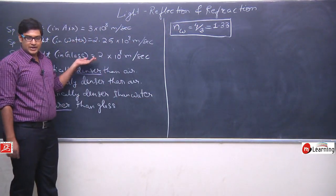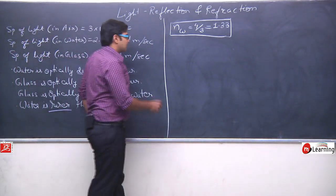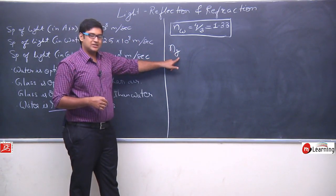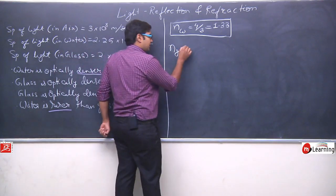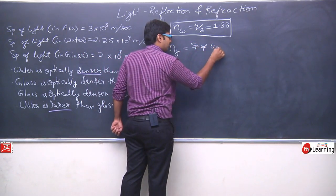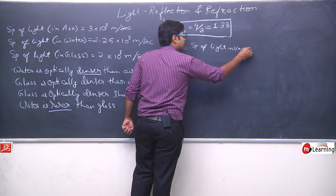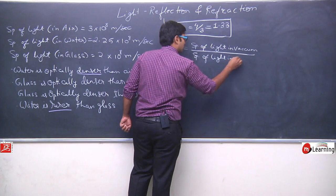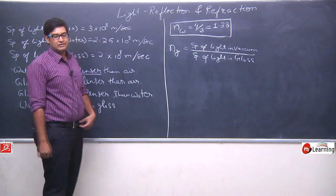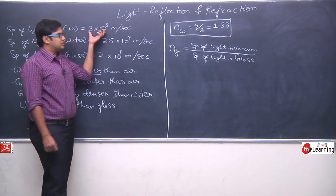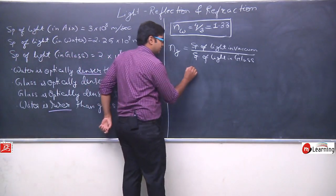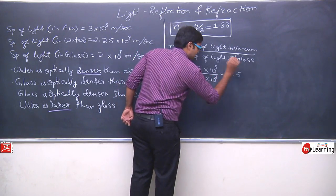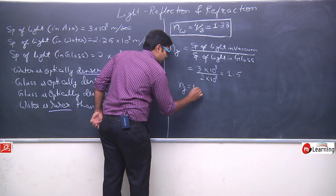Now, kya hum glass ka refractive index bhi calculate kar sakte hai? Yes, kar sakte hai, kyonki formula toh vahi hai. So let us write refractive index of glass as Ng. N represents refractive index, g represents ki jo medium hai wo glass hai. So this equals speed of light in vacuum upon speed of light in glass, which is 3 into 10 to the power 8 upon 2 into 10 to the power 8. Solve kar lijiye, you will get 1.5. So refractive index of glass is equals to 1.5.